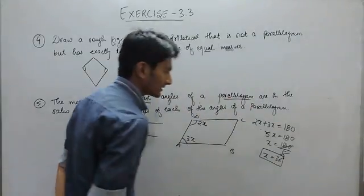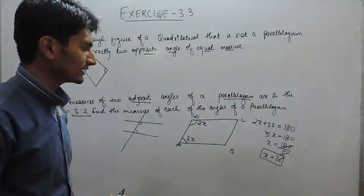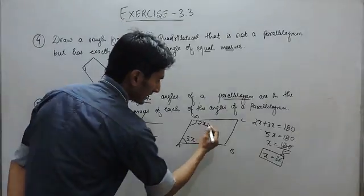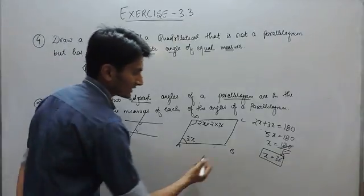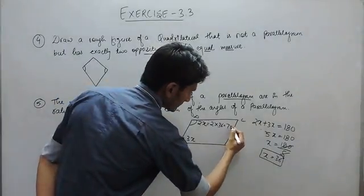The value of x is 36 degrees. So this angle must be 2 times 36 because the value of x is 36, which equals 72 degrees.